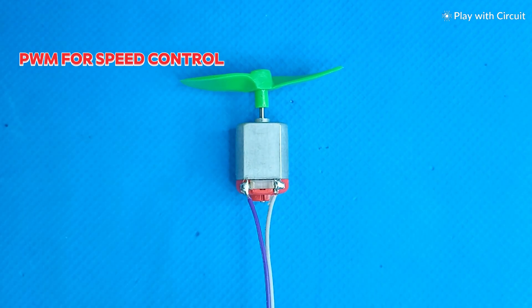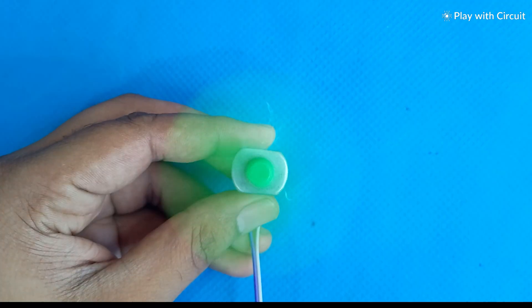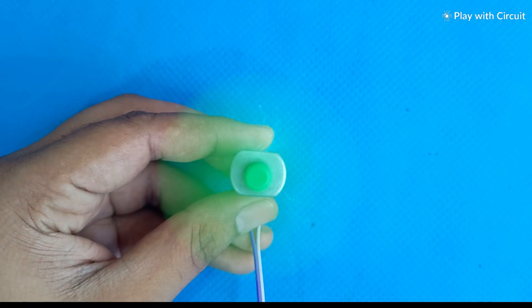Pulse width modulation for speed control and an H bridge for direction control. We can control the speed of DC motor using pulse width modulation.